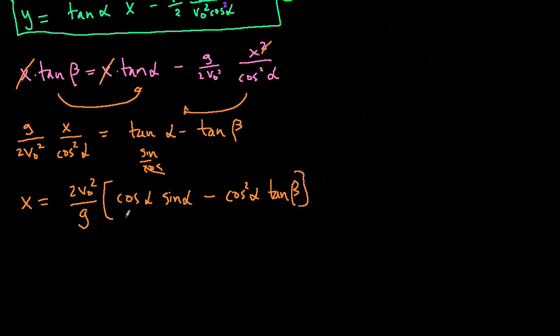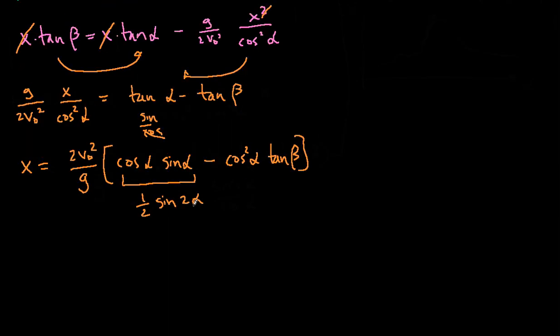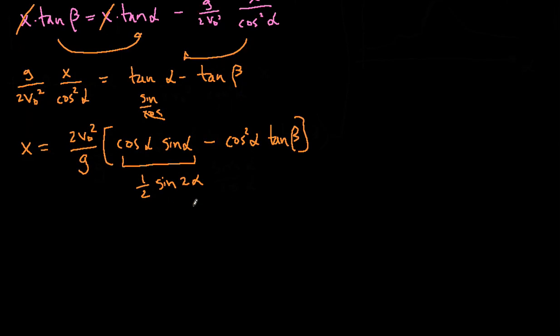And then it will be left with a cosine. So that will be cosine of alpha sine of alpha minus cosine squared alpha tangent of beta. So let's actually simplify that. That's equal to 1 half sine 2 alpha, if you remember this from trig identities.